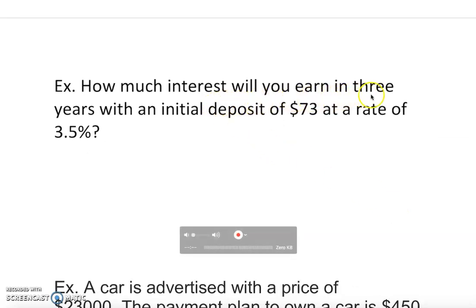How much interest will you earn in three years with an initial deposit of $73 at a rate of 3.5%? Let's find out which one is what. Clearly, P is the principal, and that is my R, the rate.